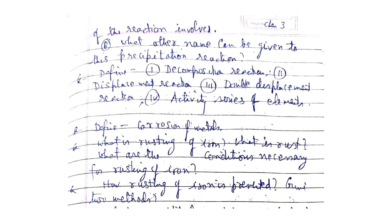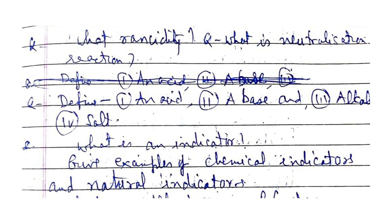What other name can be given to this precipitation reaction? Define decomposition reaction, displacement reaction, double displacement reaction, and activity series of elements. Define corrosion of metals. What is rusting of iron? What is rust? What are the conditions necessary for rusting of iron?